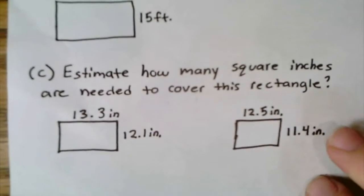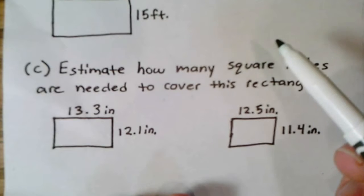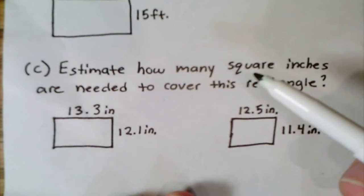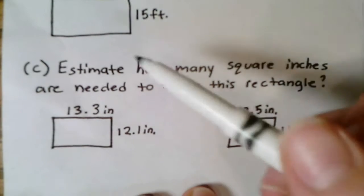Another type of example might ask you to estimate. This one says, 'Estimate how many square inches are needed to cover this rectangle.' If they're asking how much is needed to cover or fill something, that's always talking about area. For example: I'm tiling my bathroom—how many square-foot tiles do I need for a distance that's 4 feet long and 3 feet wide? I'd multiply 4 times 3 and get 12 square feet, so I need 12 tiles. This is asking for area, but wants us to estimate.